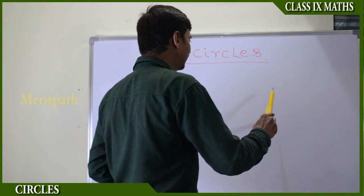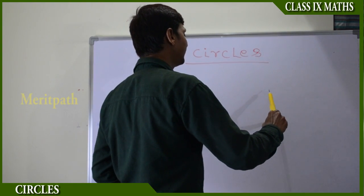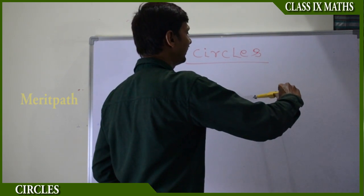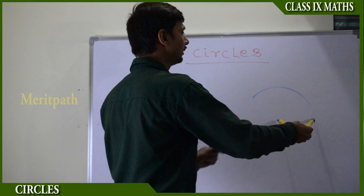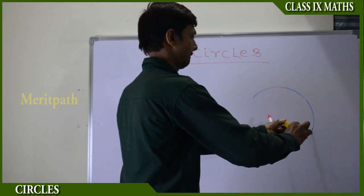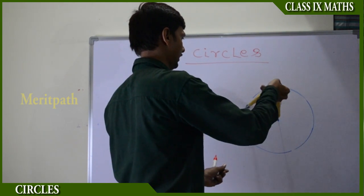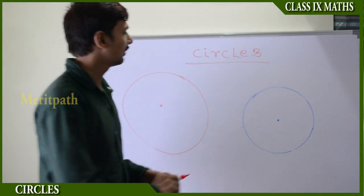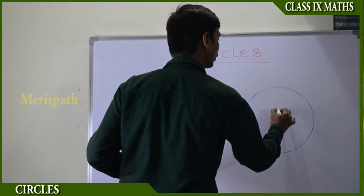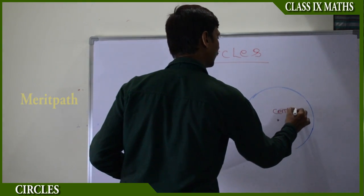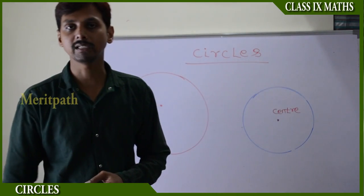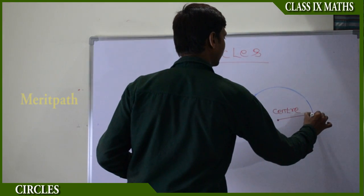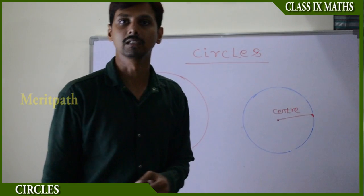Let us take a fixed point and using this fixed point let us draw a circle. This is the circle. The fixed point is called the center of the circle. From the fixed point, take any point on the circle and join it — this is called the radius of the circle.